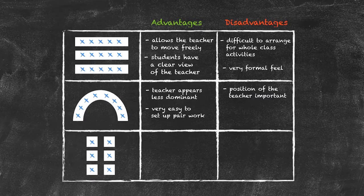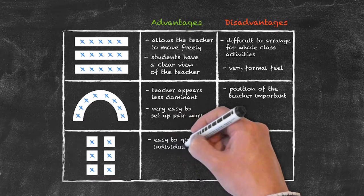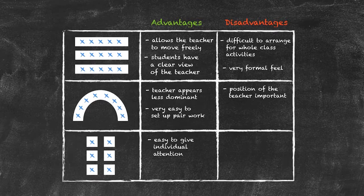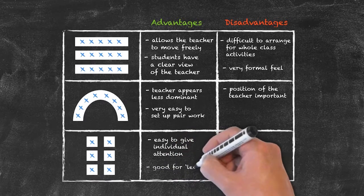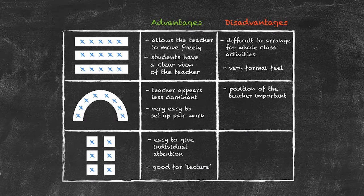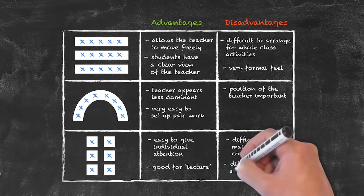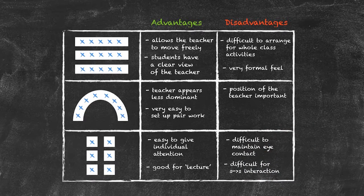Our final arrangement is individual desks. The potential advantages are that it's easy to give individual attention by working with one student at one desk without disturbing the person next to them. It's also very useful if you are giving a didactic teaching lesson — explaining information — and good for a lecture-type situation. There are some disadvantages: it's difficult to maintain eye contact with all students, and it's quite difficult to get student-student interaction.